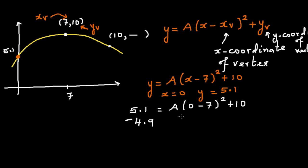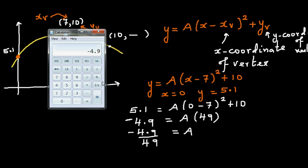So this is a simple calculator. 5.1 take away 10 just to confirm is minus 4.9, so I'm taking 10 from both sides. This is equal to a times 49.